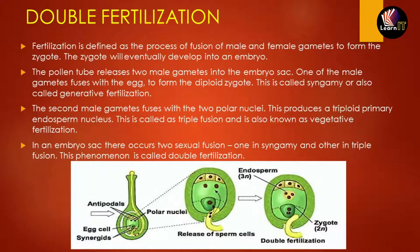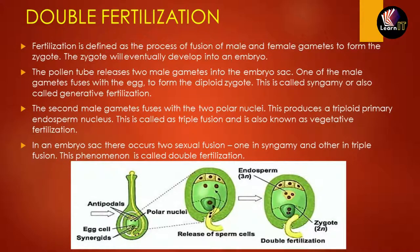So two kinds of fertilization happen inside the ovule: generative fertilization, in which one male gamete fuses with the egg, and vegetative fertilization, in which the two polar nuclei fuse with the second male gamete producing a triploid nucleus. Because two kinds of fertilization — syngamy and triple fusion — occur inside one ovule, the entire process is called double fertilization.